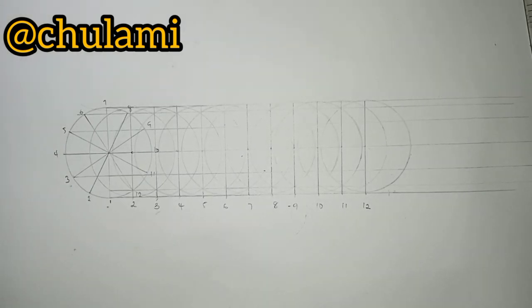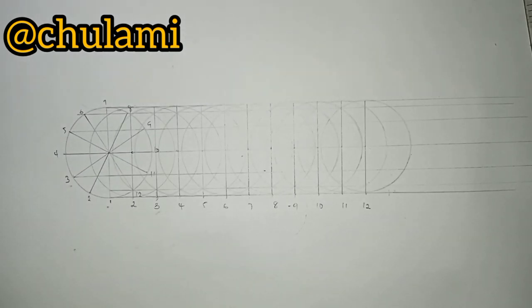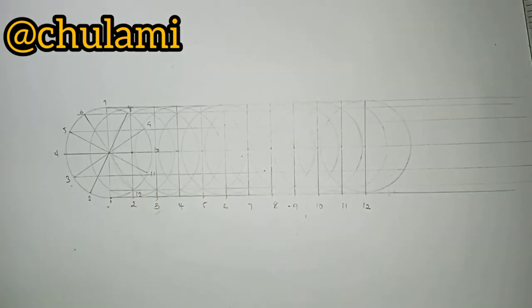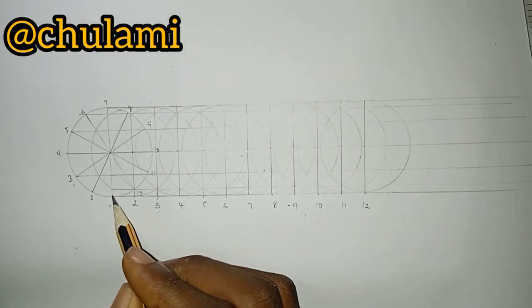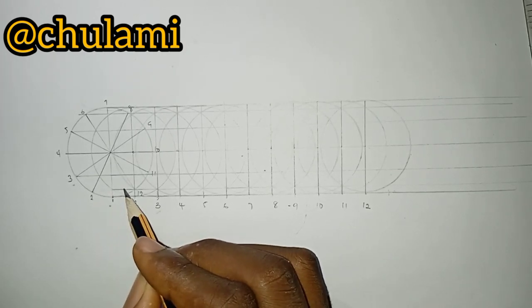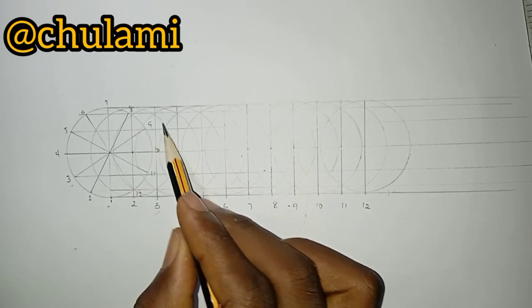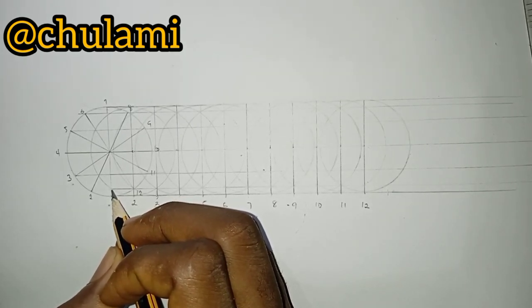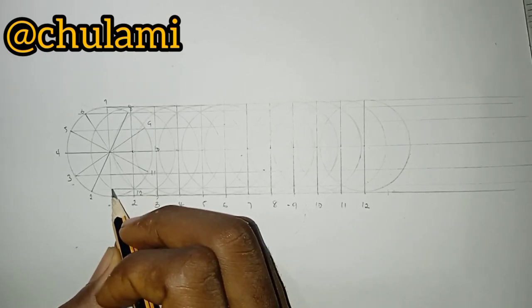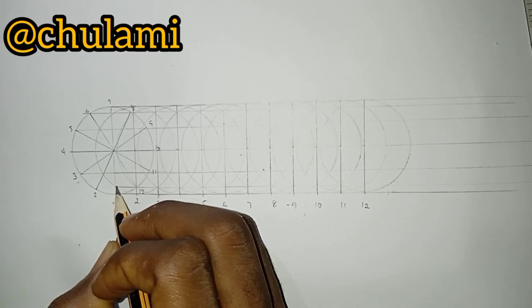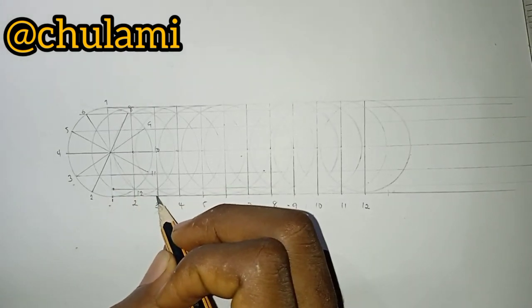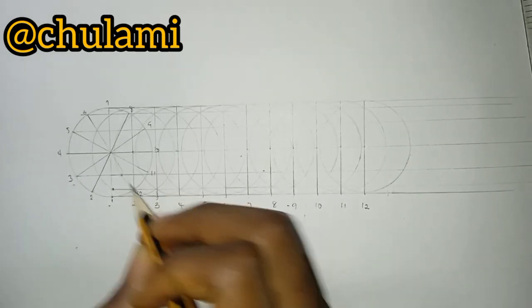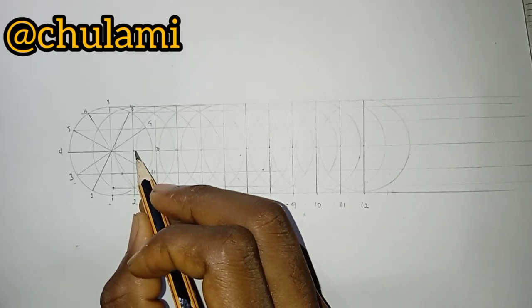Now this is a very crucial part - we want to draw the locus of this cycloid. Watch this very carefully. This is circle 2, this is line 2. Where circle 2 and line 2 meet, you mark that point. This is circle 3, where circle 3 and line 3 meet, mark the point. This is circle 4, where circle 4 and line 4 meet, mark the point.